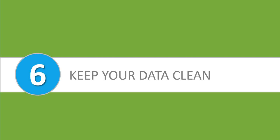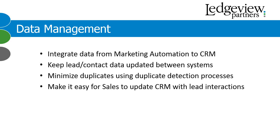The sixth and final area is data management. It's important to keep your lead data clean. Integrate data from your marketing automation and CRM to keep lead and contact data in sync. That integration will also give your sales team exposure to the ways the lead interacted with your company, including their web viewing history, emails they engaged with, forms they submitted, and webinars they attended — intelligence that will drive more meaningful conversations. Leverage duplicate detection settings in your CRM system to minimize duplication. Encourage your sales team to keep lead records updated in CRM after each conversation. Be strategic about the information you really need to collect and make it easy to document in the system.